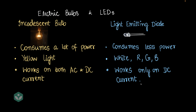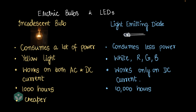An incandescent bulb runs for about a thousand hours before it gets spoiled, whereas LEDs run for 10,000 hours — that's ten times longer. When it comes to price, the incandescent bulb wins. Incandescent bulbs are pretty cheap compared to LEDs, which are more expensive.